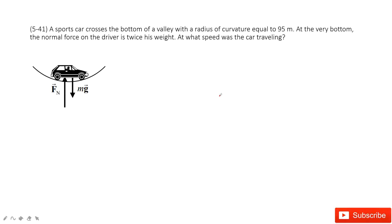In this one, we have a car cross the bottom of this circle and ask you to find the speed at this bottom. And then the radius is given.